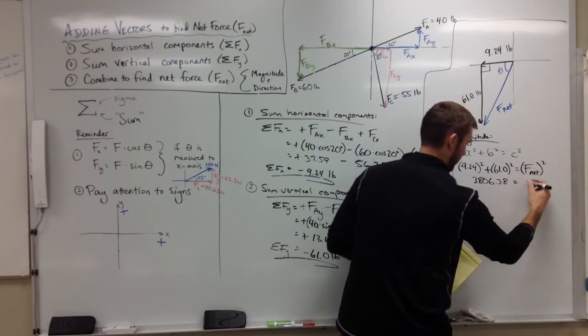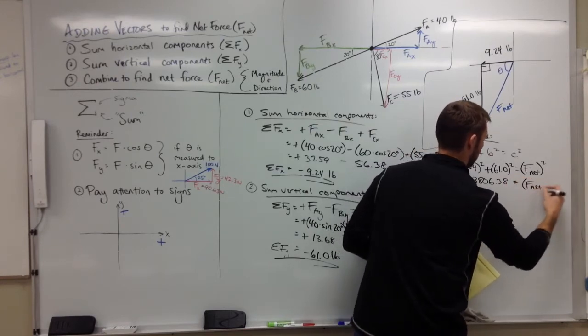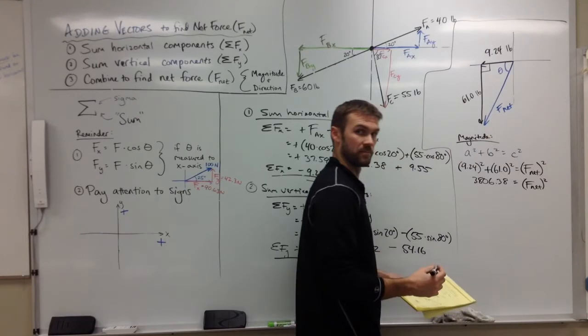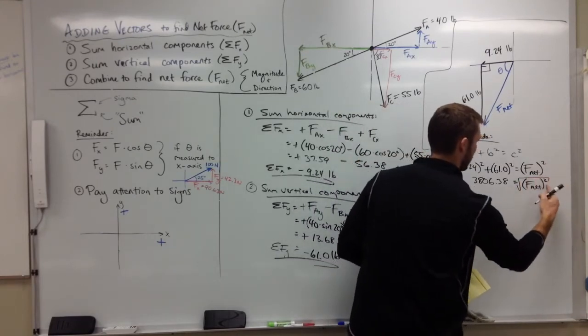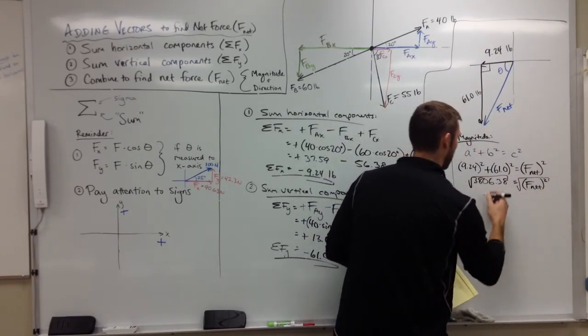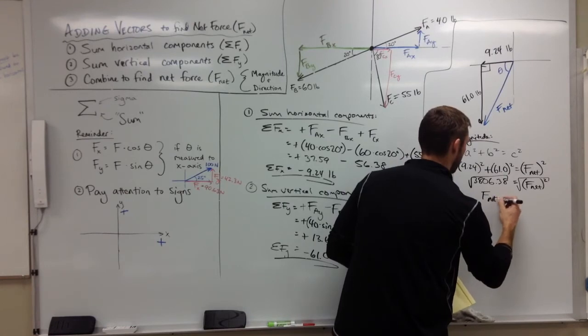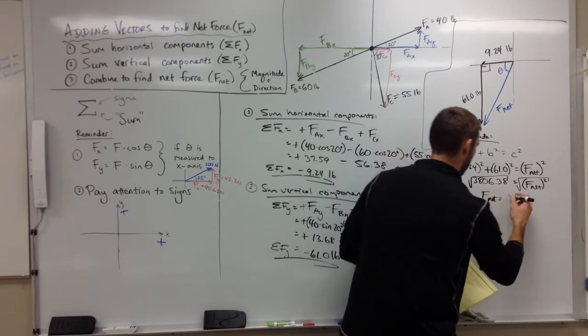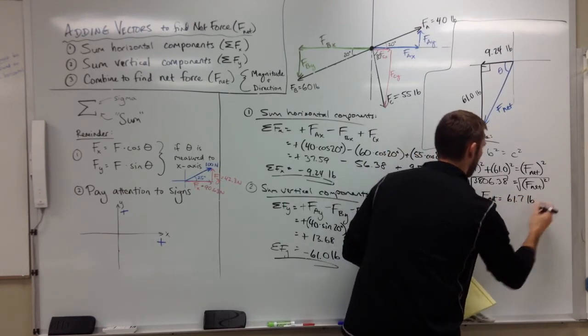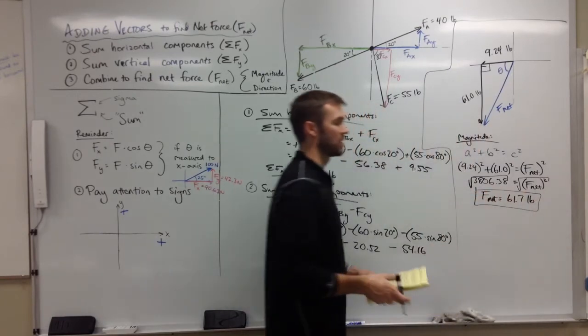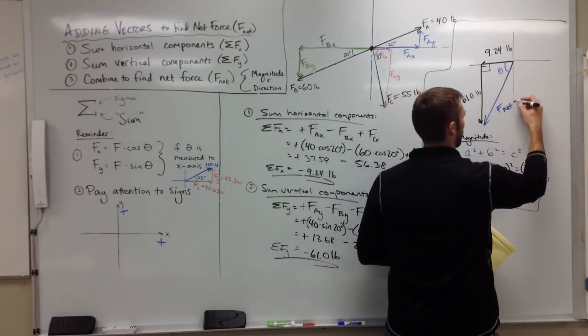But that's not my net force, that's my net force squared. So to solve for the net force, we're going to take the square root to get rid of the squared. I get it to both sides, so I get a net force of 61.7 pounds. That's the magnitude of this overall force.